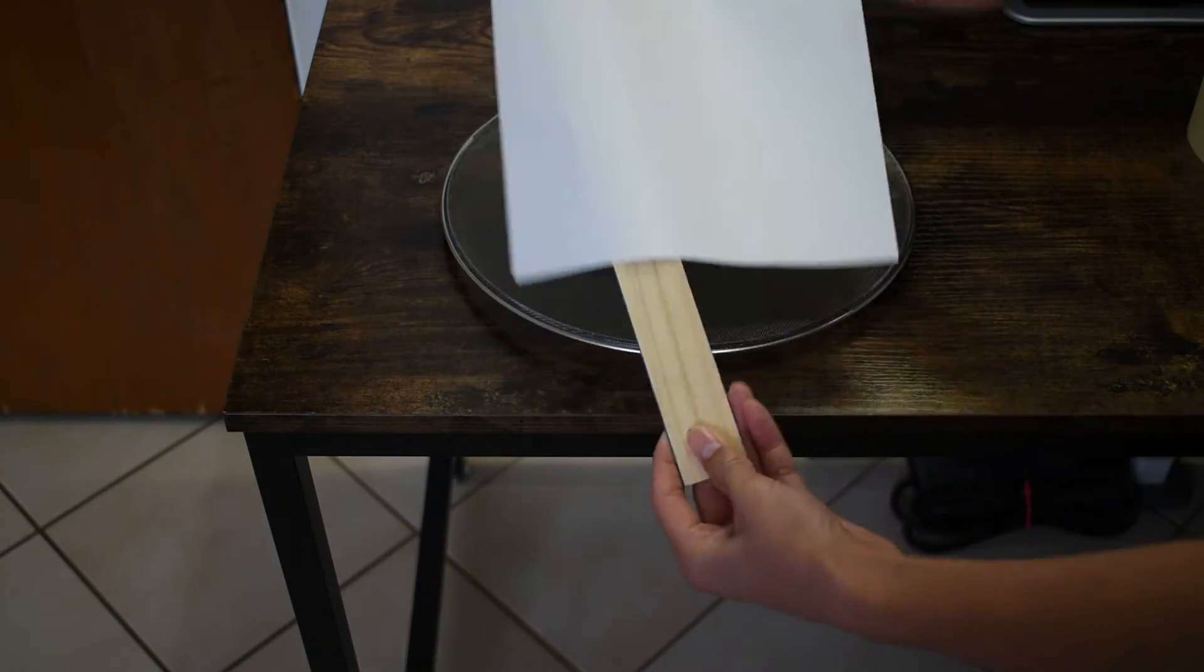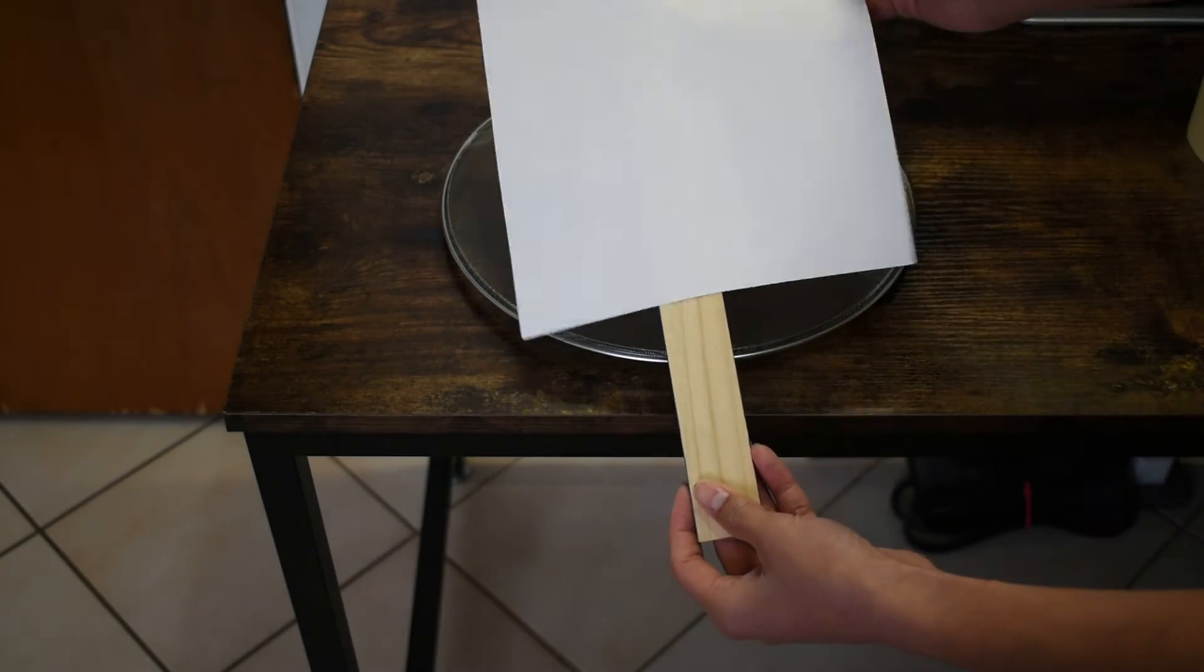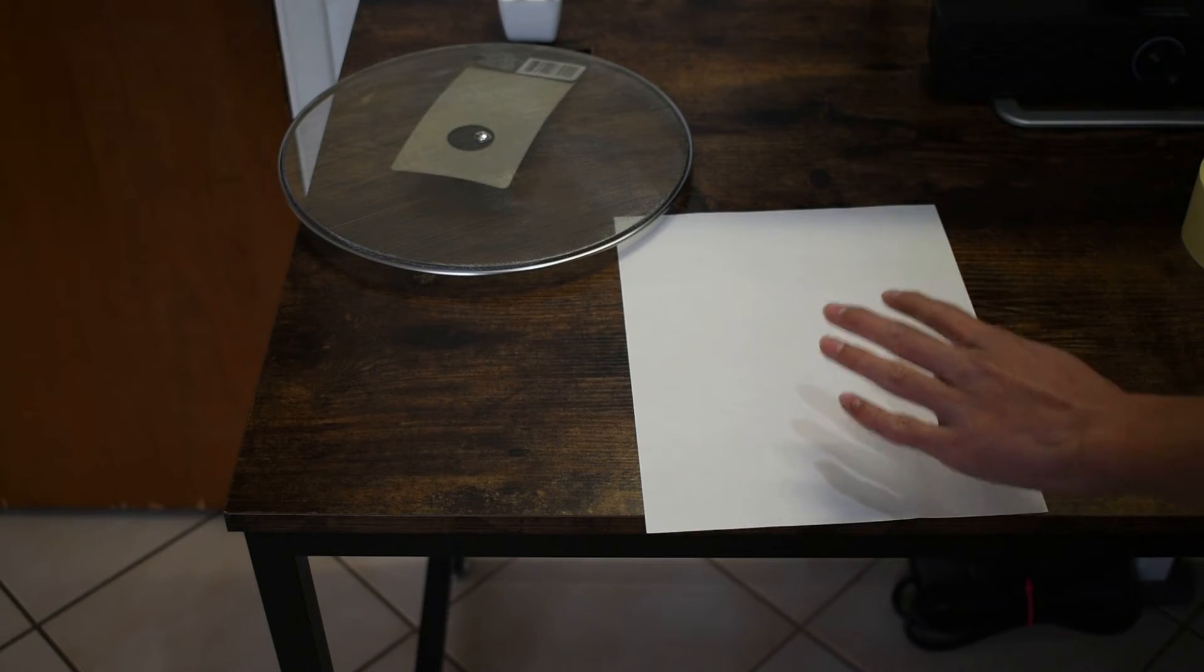So in this case it still flew off with the paper on it, but it was a little slower because as it was coming off, the paper had a little air resistance to it, so it slows it down.